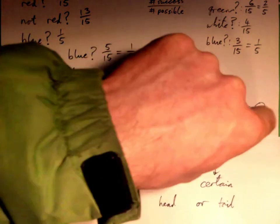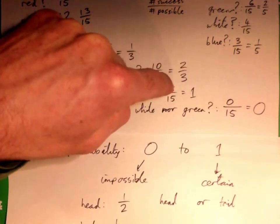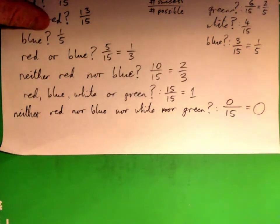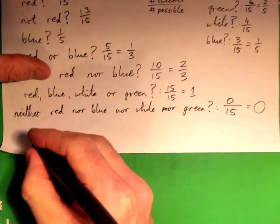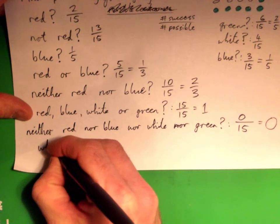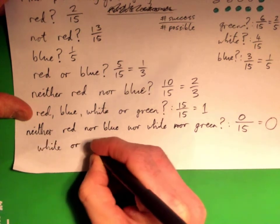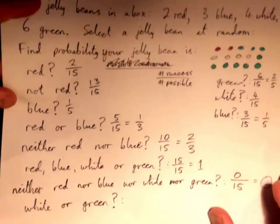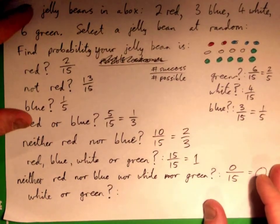Right. So, that's probability. That's the lowest you can get in probability, and one is the highest. And everything else is in between. Okay. And just for fun, probability that our jelly bean is white or green. White or green.